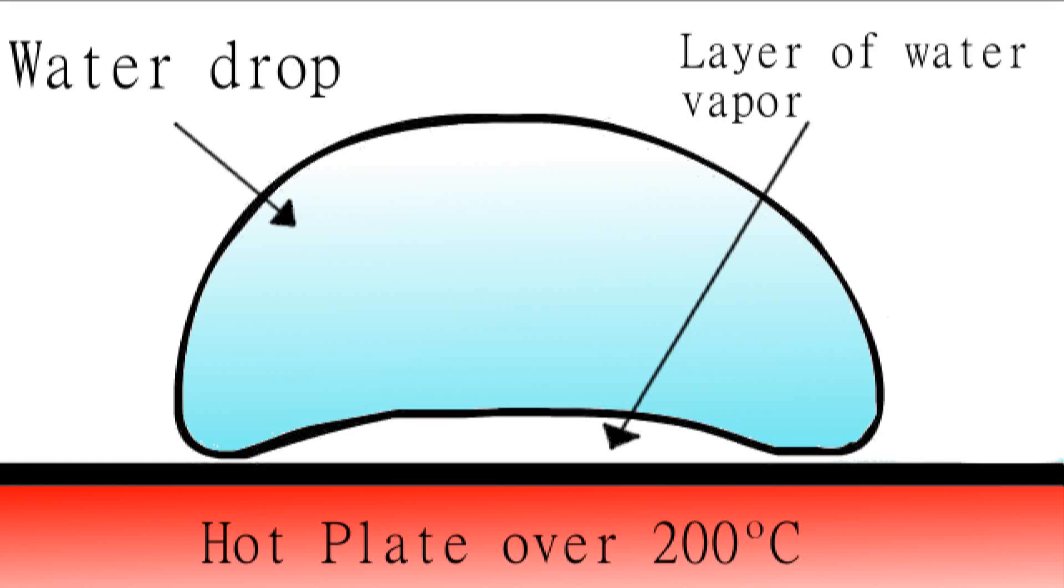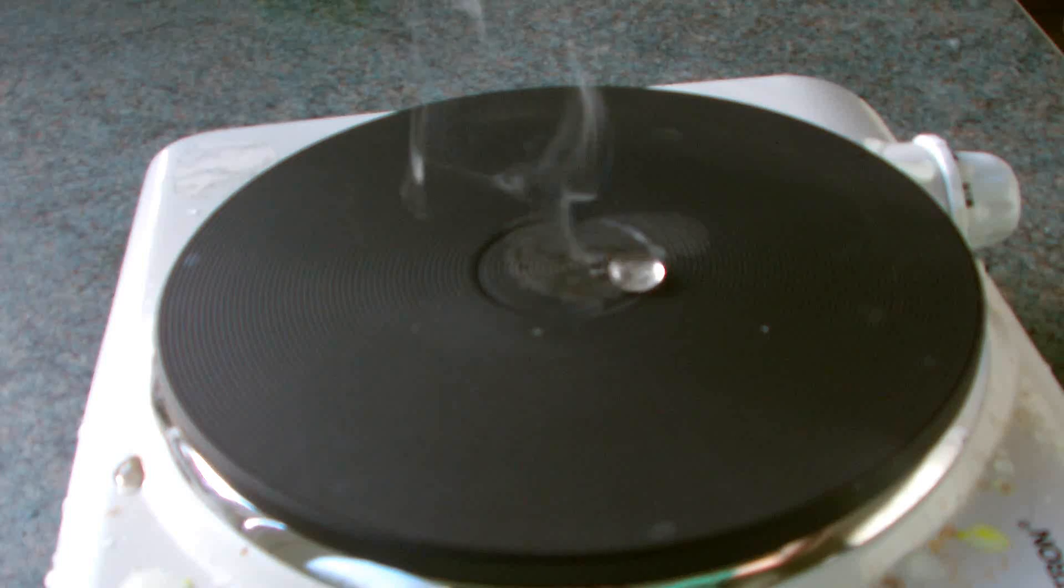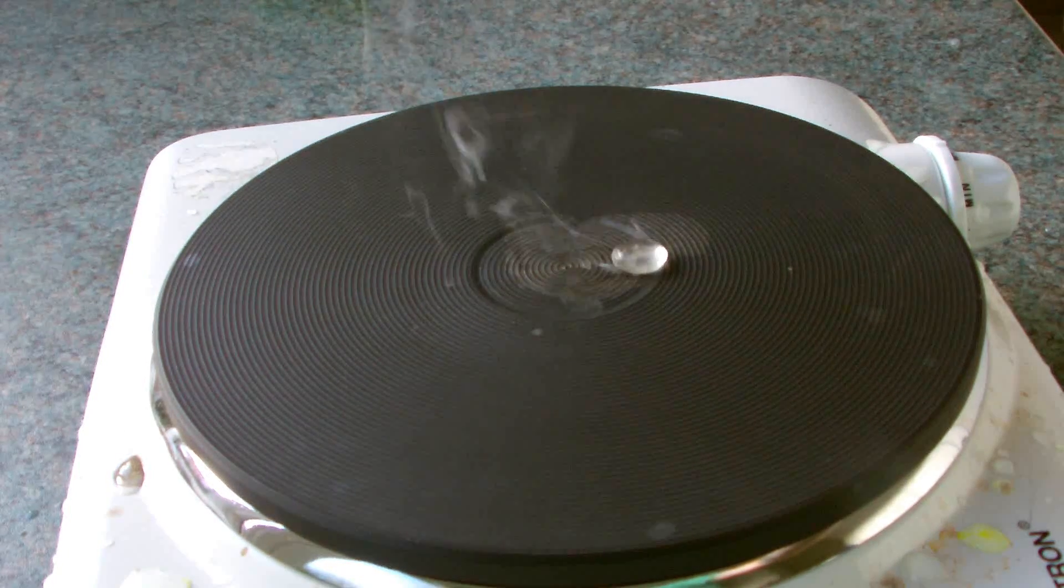Well the Leidenfrost Effect occurs when the droplet contacts the highly heated plate. And upon contact the bottom of the droplet instantly vaporizes which forms a protective layer under the droplet allowing it to skid across the plate with reduced evaporation.